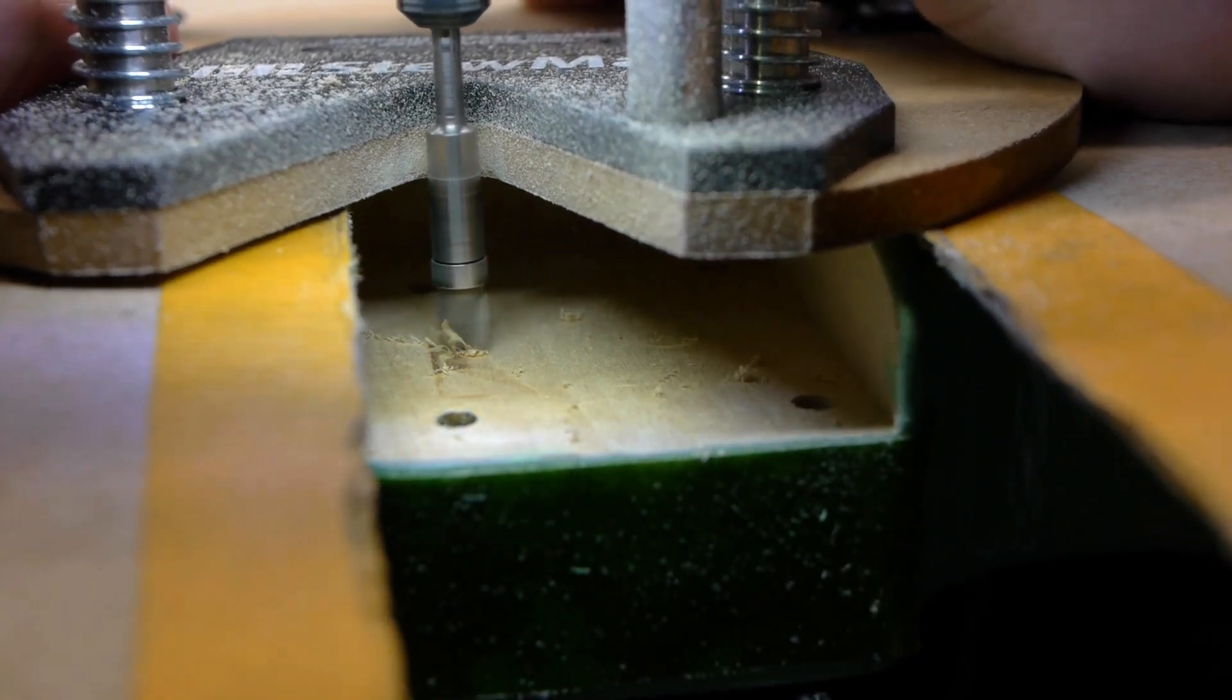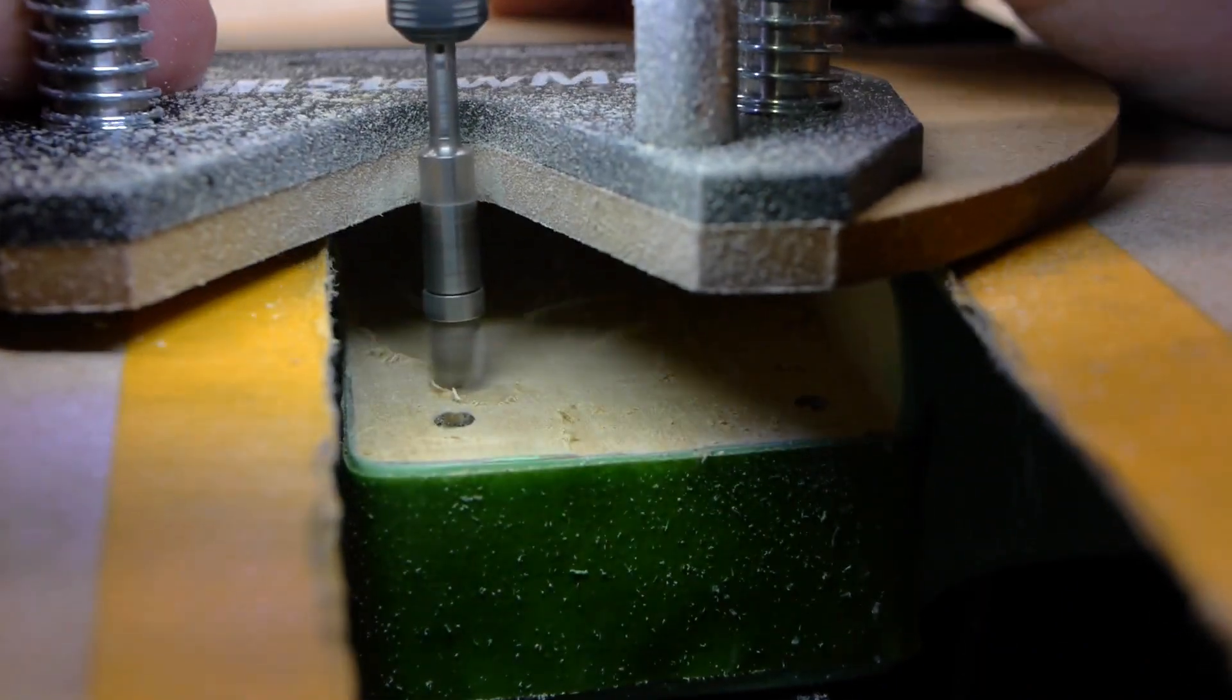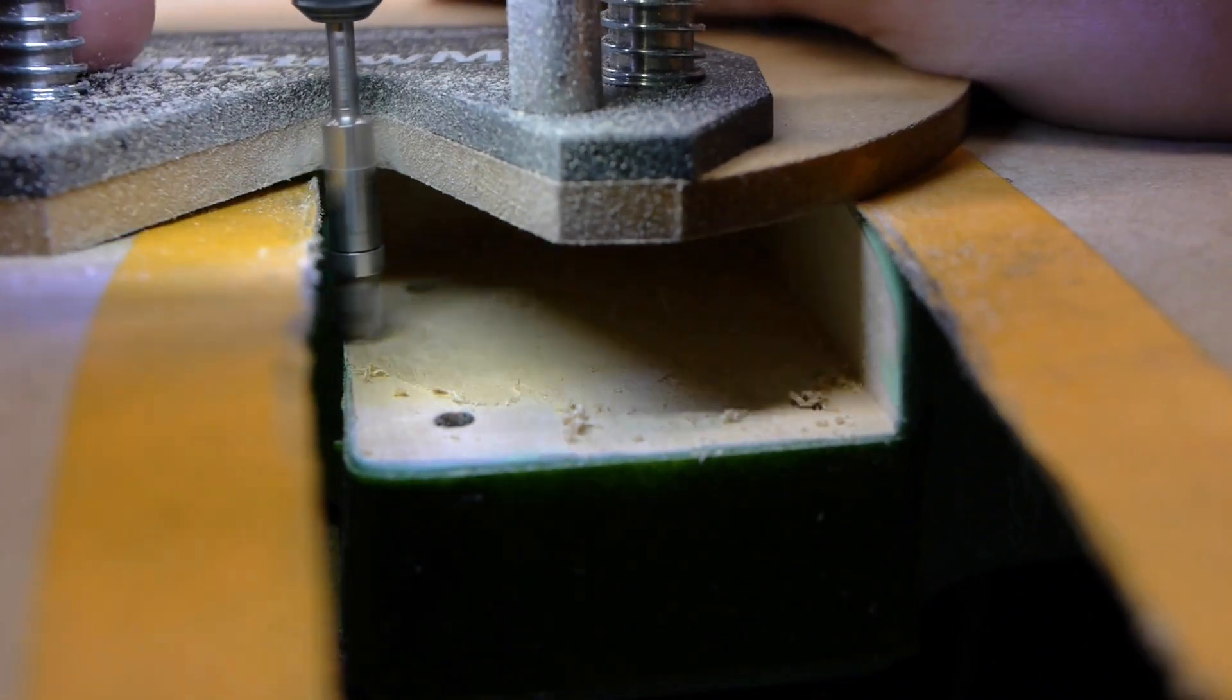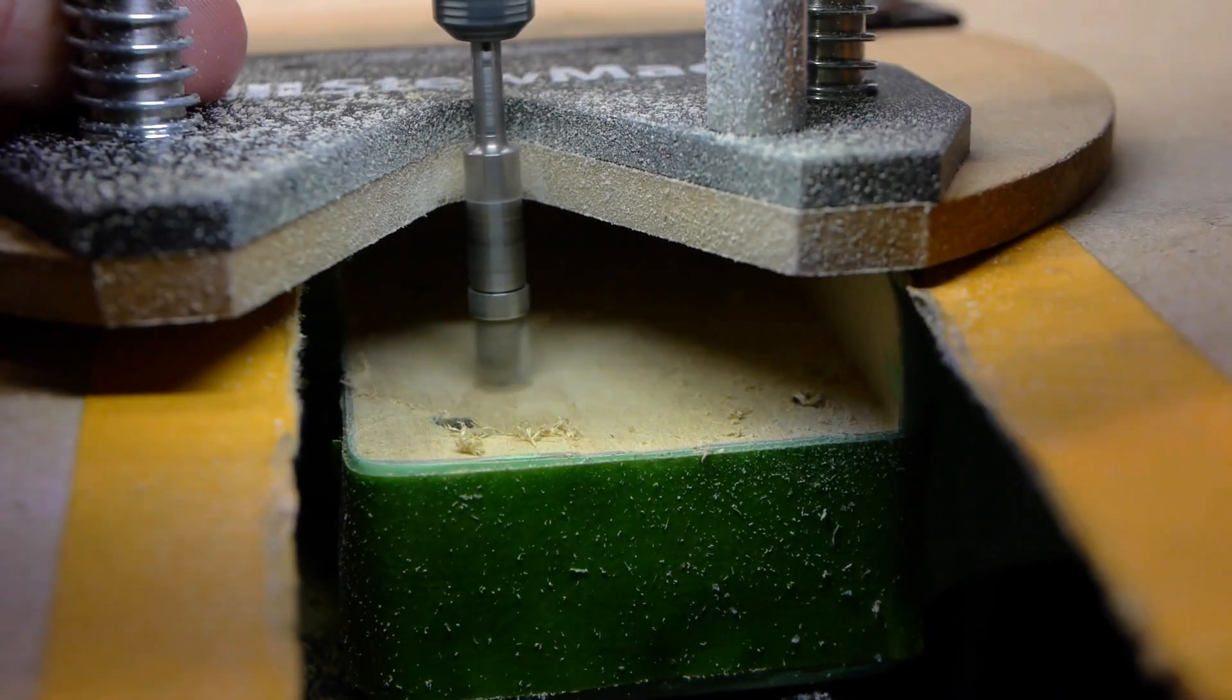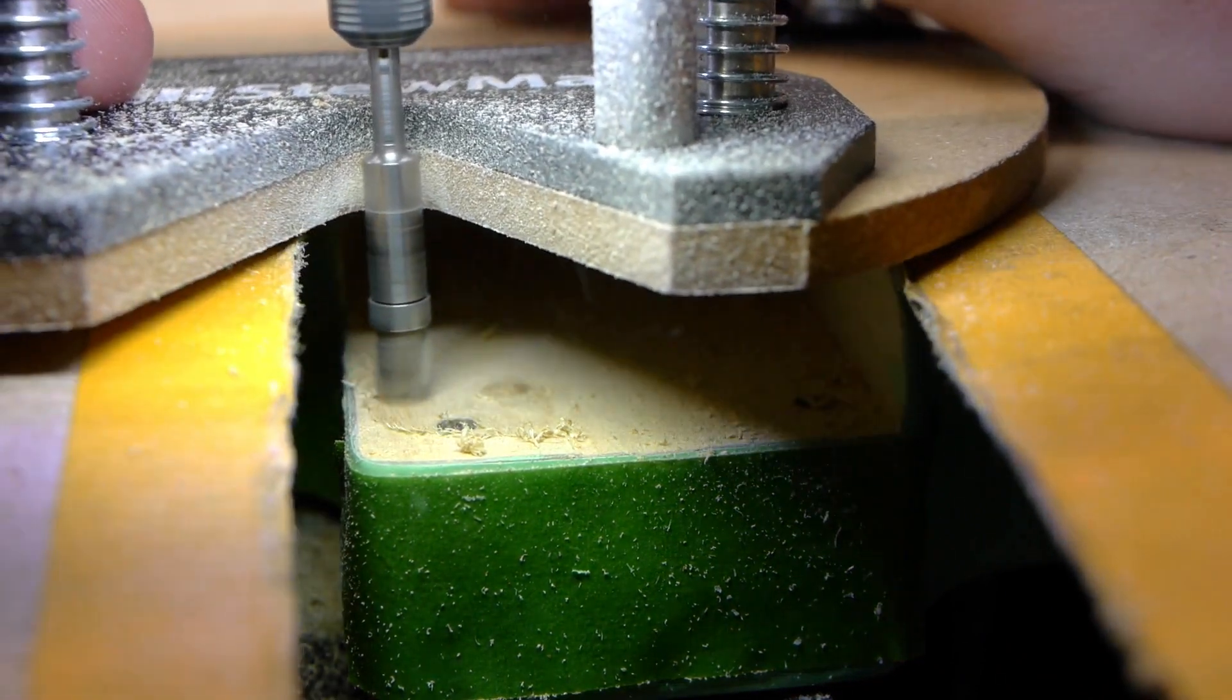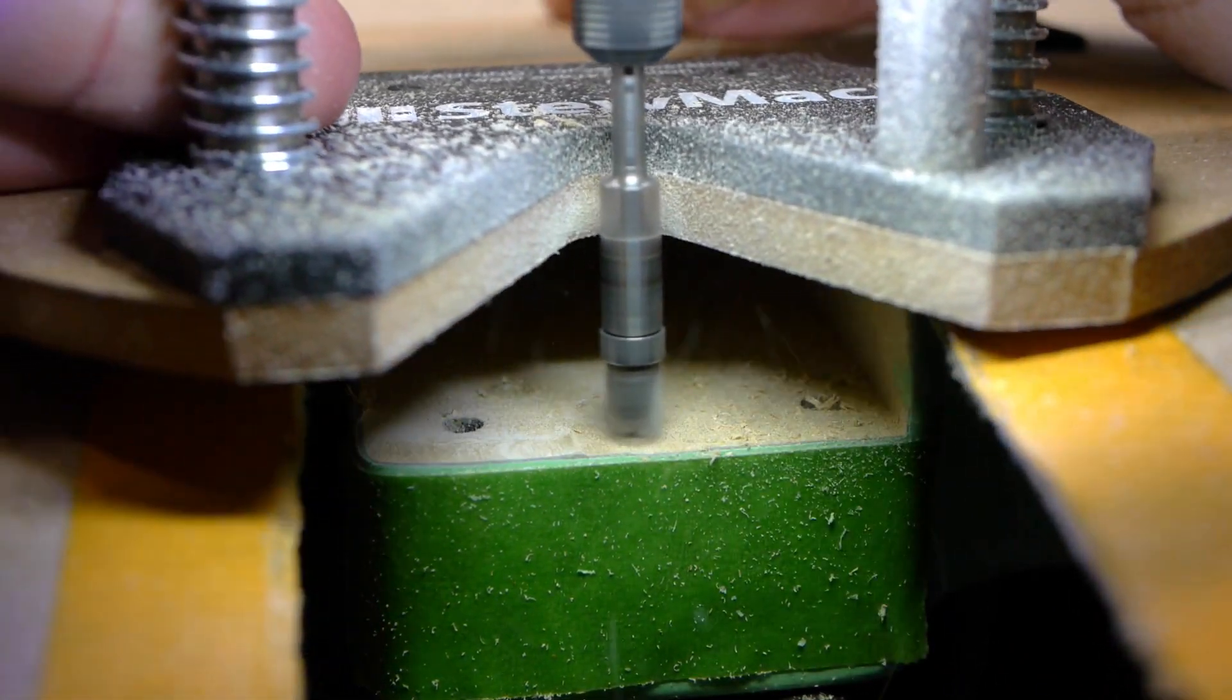Remember, the worst thing that happens if you don't have the router low enough is you don't cut low enough or cut at all. The worst thing that happens if you have the router too low is you completely ruin whatever you're working on. Your number one priority is always to never let the router tip forward and go deeper into your workpiece than you intend to.